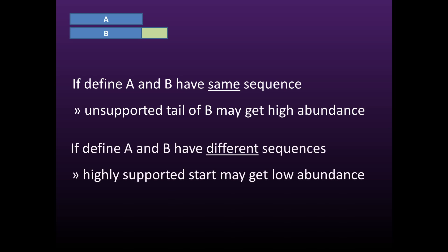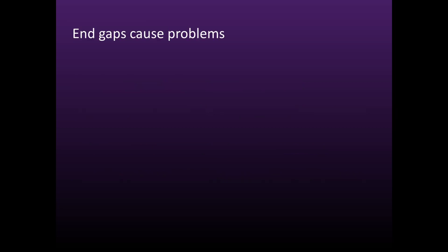Conversely, if we say that A and B have different sequences, then a single high-abundance biological template sequence is fragmented over many different sequences, each one of which will have relatively low abundance. End gaps cause problems, and it's therefore better to ensure that reads of the same template have the same length.